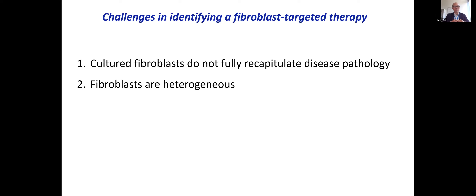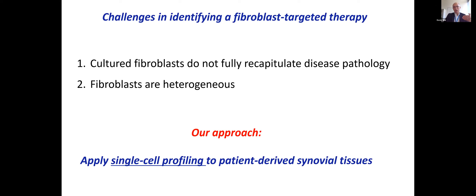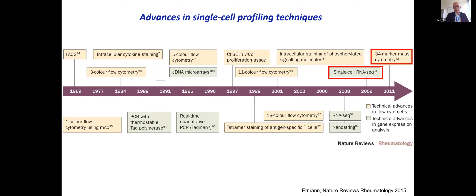Our overall approach to addressing these two barriers — translating basic discovery into therapy — is to start with patient-derived joint tissue as the source material. What makes our approach unique is the ability to leverage novel single-cell profiling techniques to examine fibroblasts at a single-cell level. This diagram, borrowed from a review by York Erman, summarizes advances in immune profiling techniques over the past 10 to 15 years.